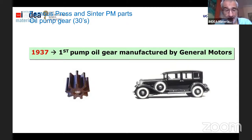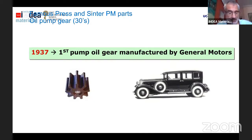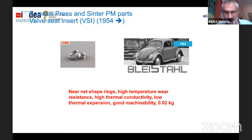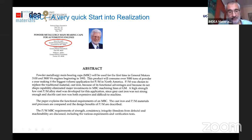A lot of parts have been developed in the industry using PM, especially for the automotive industry. The first part was produced in 1937 — it was an oil pump gear manufactured by General Motors. It's a part that would be much more expensive if made by machining. It was a real success and the first of its kind in the industry. After that, many different parts were developed. One example is a valve seat insert developed for Volkswagen.